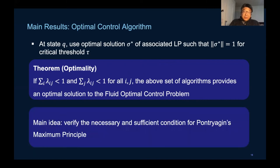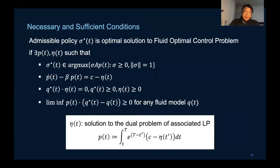In doing so, we basically need to construct functions and processes associated with both Hamiltonian and Lagrangian function. In particular, we need to construct the process eta of t and the p of t here.